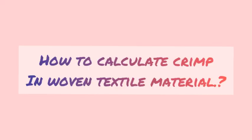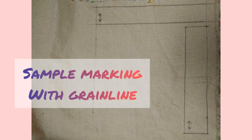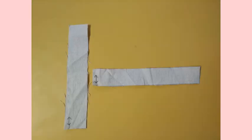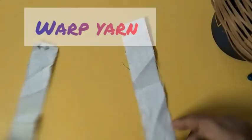Now today I will show you how to calculate crimp in woven textile material. We are taking 100% cotton machine material. First do the marking with the grain lines, warp and weft samples cut out, and then we will start with the practical.